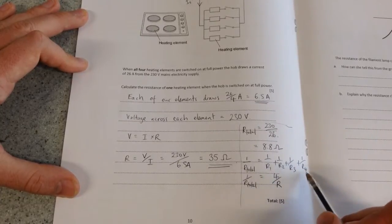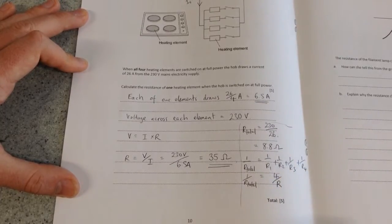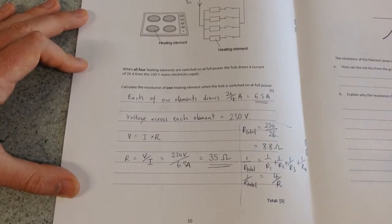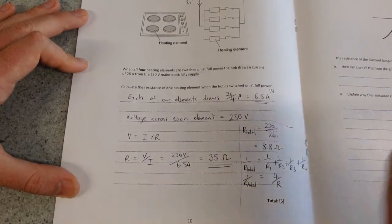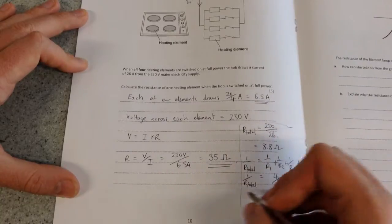It's 4 over R. Because you've got the same denominator, so you can put them all over R, and then it's 1 plus 1 plus 1 plus 1, 4 over R. So just a mathematical thing there.